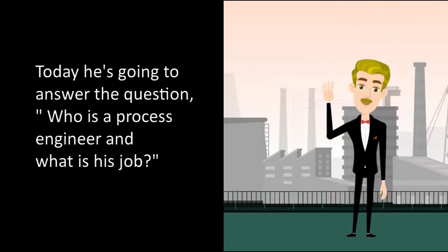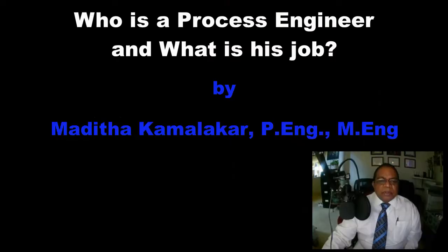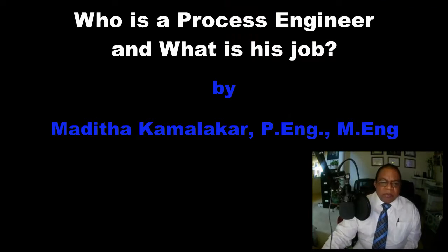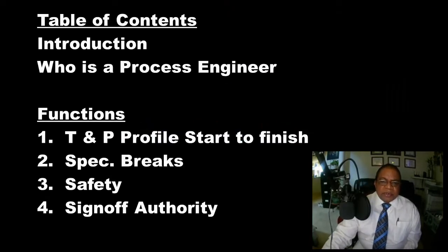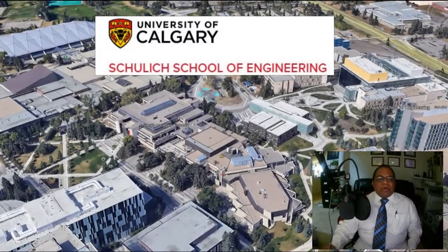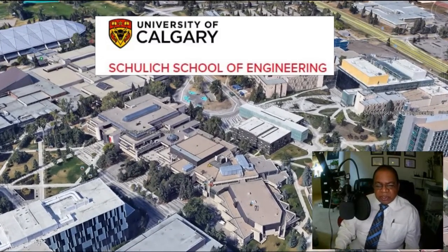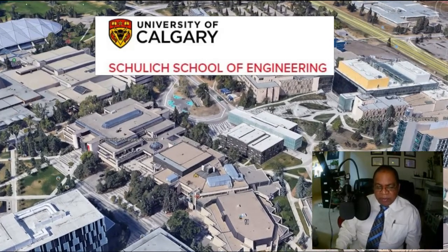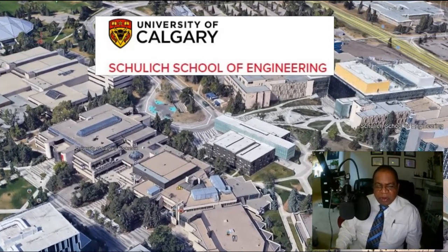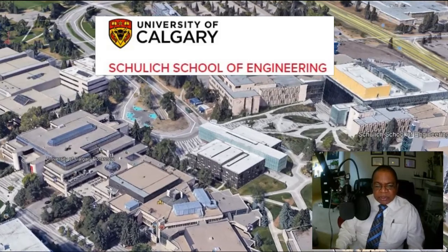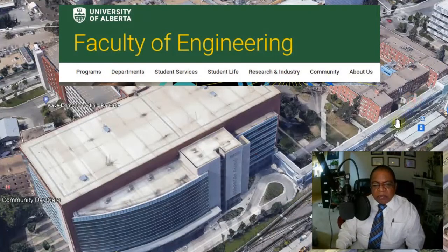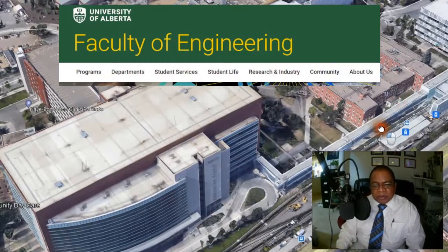Today he's going to answer the question: who is a process engineer and what is his job? A process engineer is a reserved term for the oil and gas industry. A process engineer would have completed, as a minimum, an undergraduate program in a college of engineering. The undergraduate program can be in chemical engineering or oil and gas engineering. It is wrong to call a mechanical engineer a process engineer, since he would not have studied the courses necessary for being a process engineer.